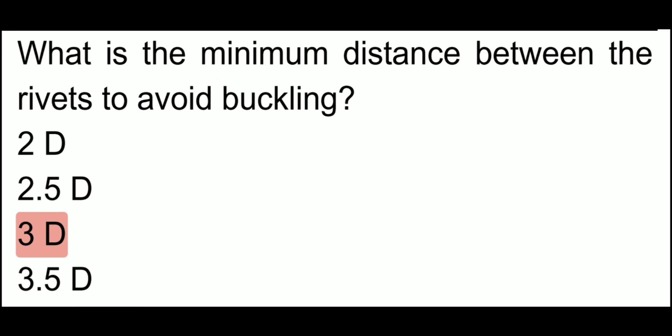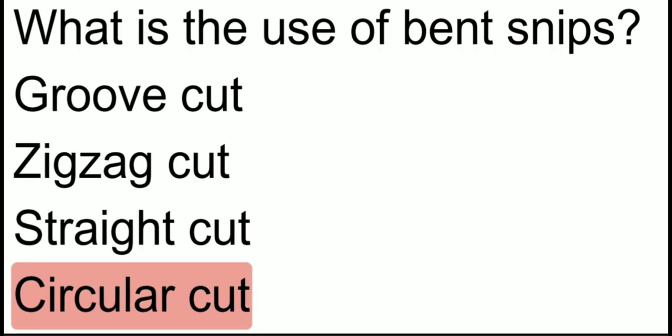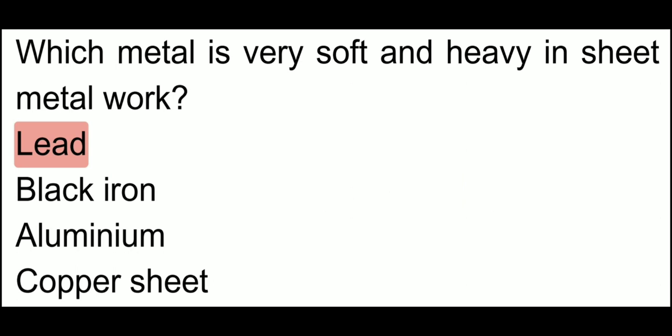What is the minimum distance between the rivets to avoid buckling? The minimum distance between rivets to prevent buckling is 3D. What is the use of band snips? The main use of band snips is for circular cutting.